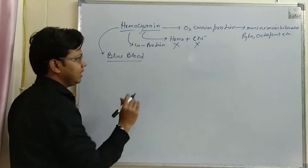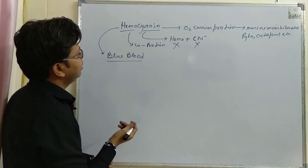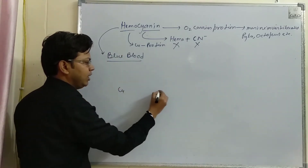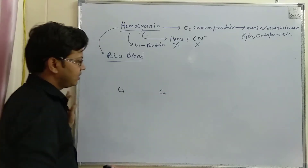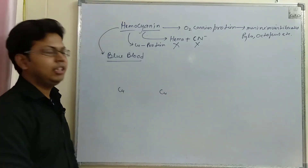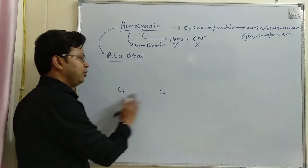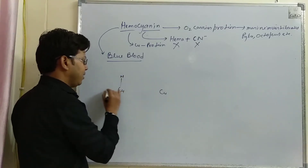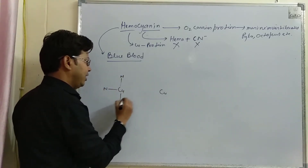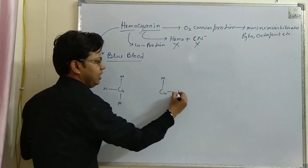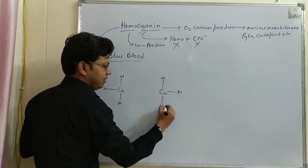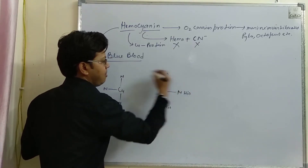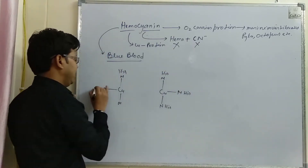Let us look at the structure of hemocyanin. One molecule of hemocyanin contains two copper atoms, and these two copper atoms are coordinated to the histidine ligand.